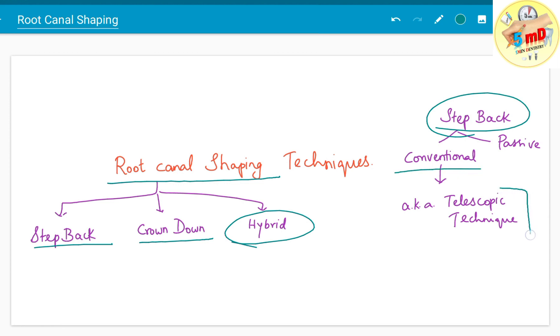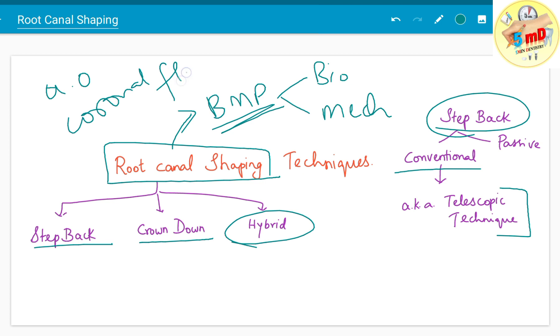Step back is classified into conventional and passive techniques. The conventional technique is also known as the telescopic technique. Root canal shaping is also known as biomechanical preparation, with mechanical and biological objectives. This step comes after access opening, coronal flaring, and work length estimation.